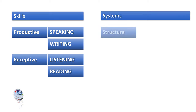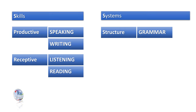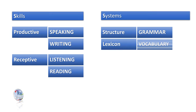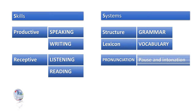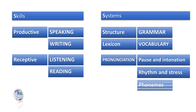Systems represent the underlying structure of the language, including grammar, vocabulary, and pronunciation. Grammar provides the rules and patterns that govern the formation of sentences, while vocabulary refers to the collection of words used to convey meaning.